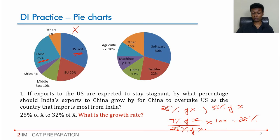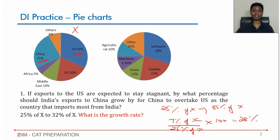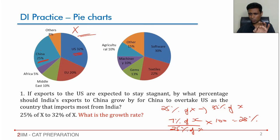Very often in pie charts, you will not be required to deal with the overall number. For many comparisons — comparing within the pie, comparing growth rates, shares, finding highest or lowest, which sector has seen the highest or least growth — the overall number might not be required. To find the actual number it might be needed, but to compare, it will not be. Keep that in mind.